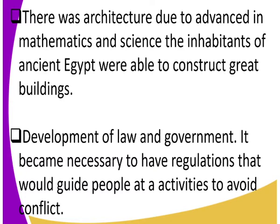Finally, there was the development of law and government. As population increased because of enough food, people had to set up laws and regulations to guide them and avoid conflicts. People started living in settlements where population was increasing, and that is why there was a need to set up a government — that is how the institution of kings came about.